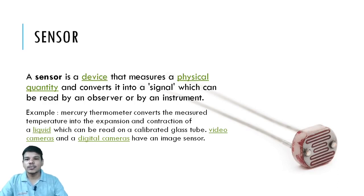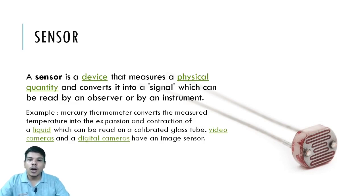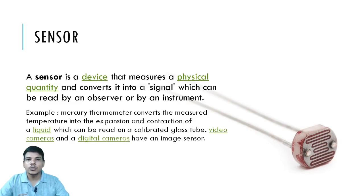A sensor is a device that measures a physical quantity and converts it into a signal which can be read by an observer or an instrument. For example, a temperature sensor senses temperature and provides a value. According to that value, an observer or instrument provides output to the actuators — like your AC. If the temperature is high, the AC turns on; if the temperature is low, the AC turns off.